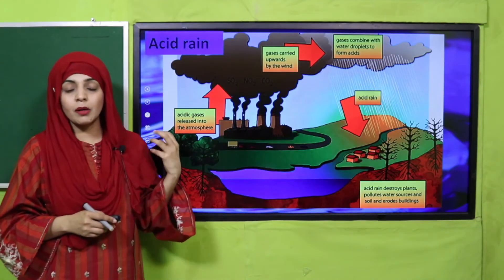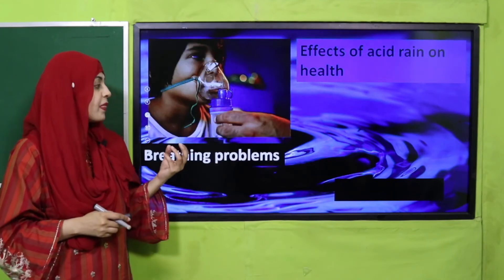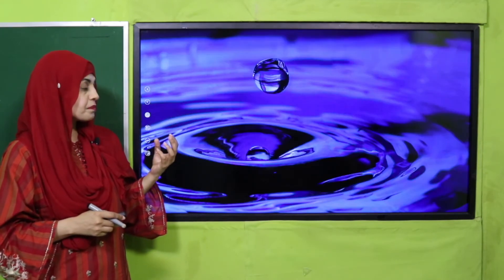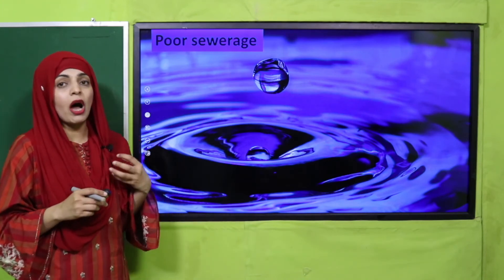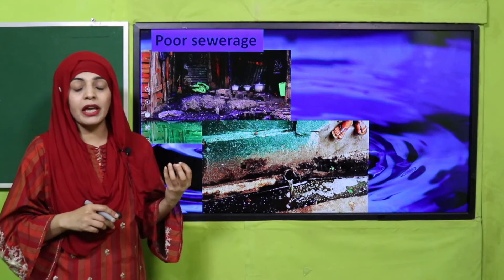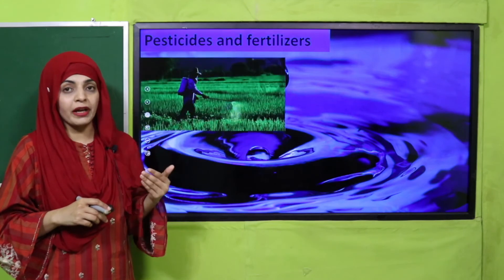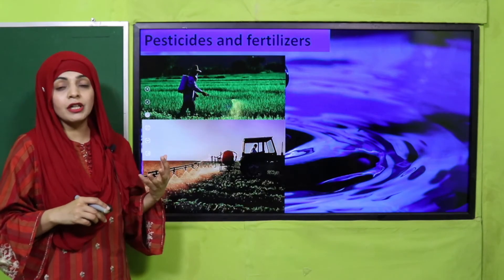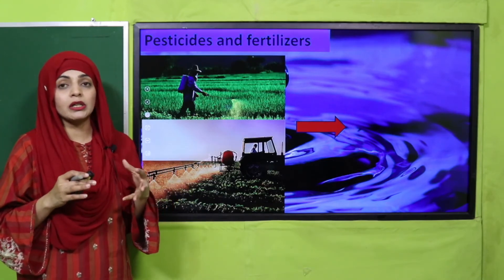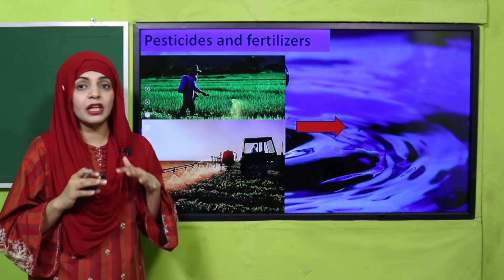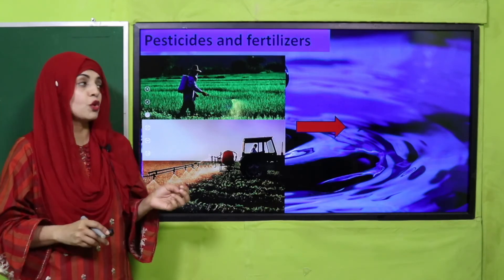Acid rain causes health issues. If sewage water mixes with drinking water, it has very bad effects on your health and you can get different diseases — you must purify the water. If fertilizers become part of underground water and you drink it, it also pollutes the water and is not safe for drinking. So, try to purify, filter, and clean the water before you consume it.